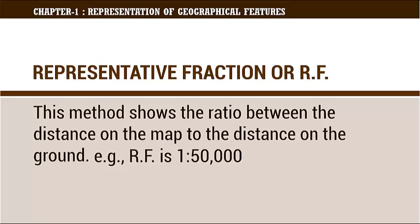Representative Fraction. This method shows the ratio between the distance on the map to the distance on the ground. For example, 1:50,000 means that 1 cm on the map represents 50,000 cm on the ground.